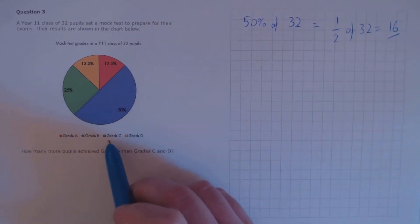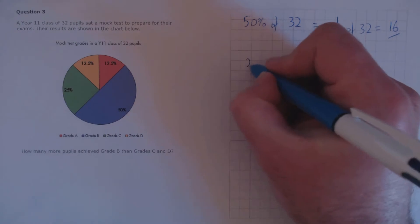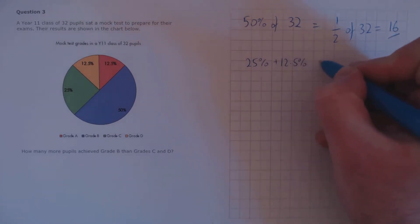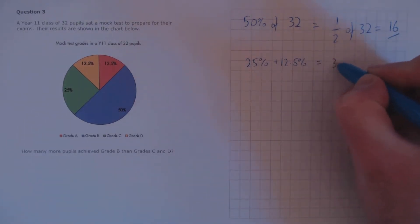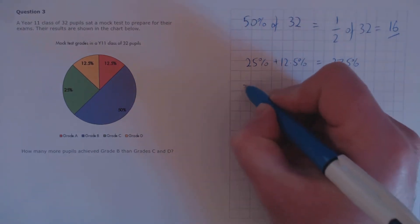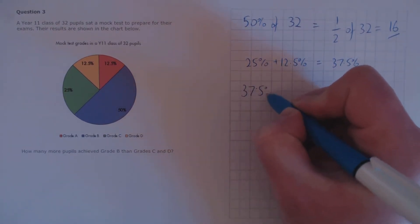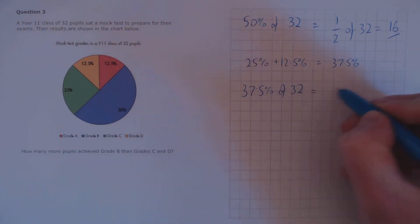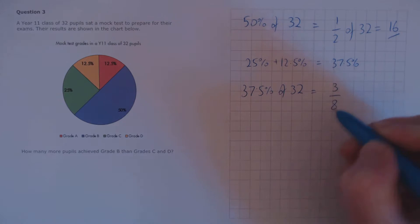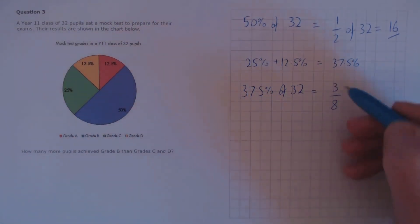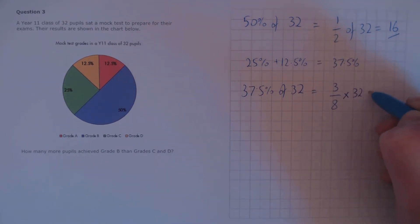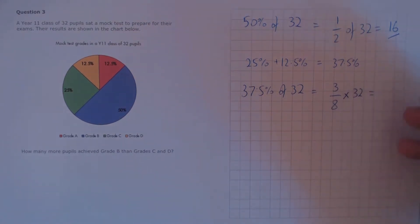Next, for Grade C and D: Grade C is 25% and Grade D is 12.5%, which in total is 37.5%. We need to calculate 37.5% of 32. We can use fractions — 12.5% is 1/8, and 37.5% is 3 times that, so that's 3/8. 3/8 of 32: one eighth of 32 is 4, so 3/8 must be 12.